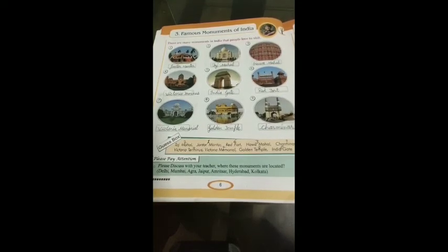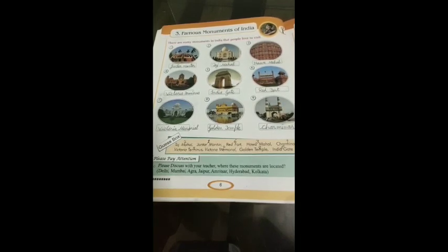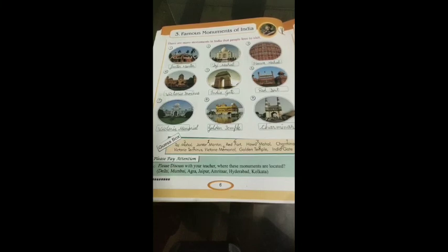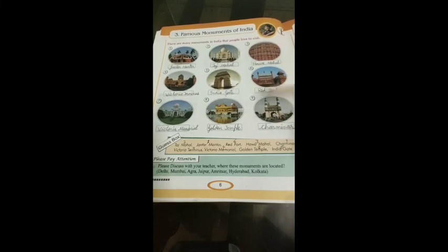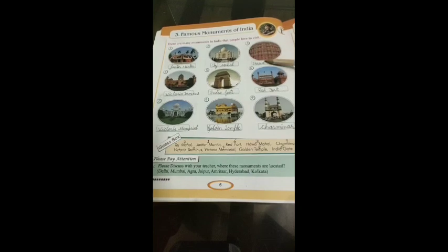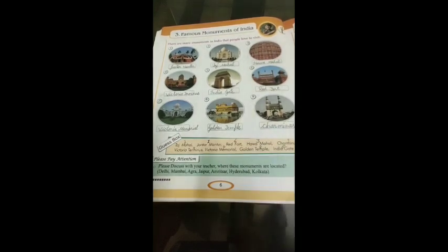Look at the ninth picture. This is the picture of Charminar. It is situated in Hyderabad. Isko Charminar isliye bola jata hai because it has four minars — four pillars bane hue hain. That's why it's called Charminar. So dear kids, you have to complete this page in your GK book and learn the spellings of these monuments. Thank you.